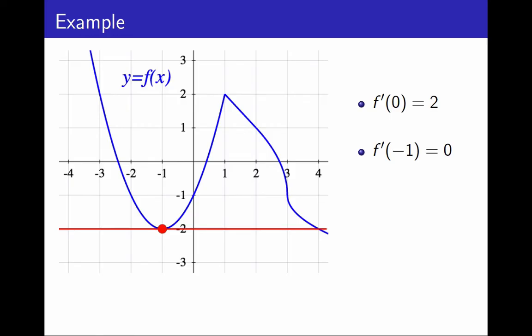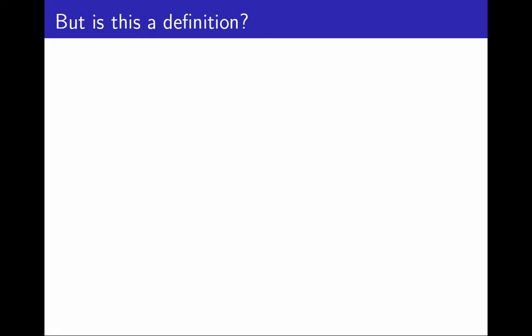This makes sense, but is this good enough for a definition? There is a problem. I want to define derivative. I could like to define it as the slope of the graph, but I do not know how to define a slope of a curve in general, only a slope of a line.